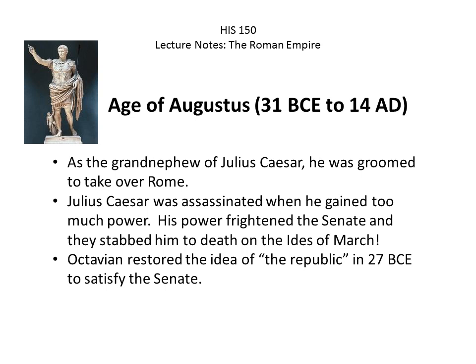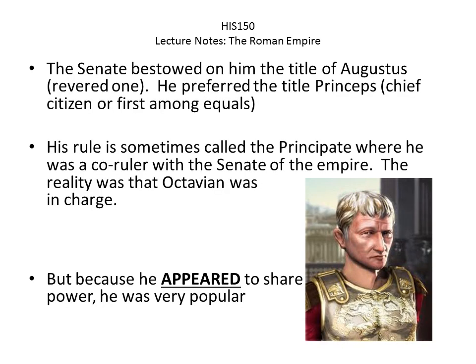Let's talk about the Age of Augustus. He becomes emperor in 31 BC and reigns till 14 AD — an extremely long time to run an empire. He was the grand-nephew of Julius Caesar, groomed to take over Rome. After Caesar's assassination and the conflict with Mark Anthony, Octavian became emperor and restored — importantly, the idea of — the Republic in 27 BCE to satisfy the Senate, even though everyone knew he was the Emperor.